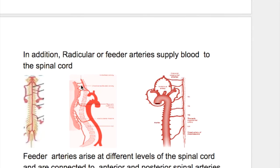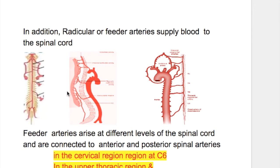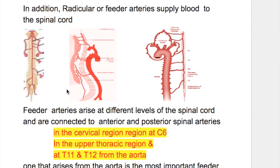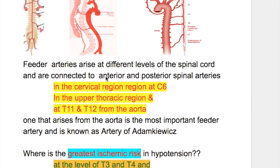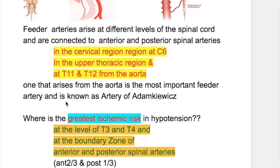In addition, the radicular or feeder arteries also supply blood to the spinal cord. Feeder arteries arise at different levels and are connected to the anterior and posterior spinal arteries. They arise in the cervical region at C6, in the upper thoracic region at T3, and at T11 and T12 from the aorta.